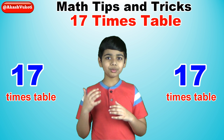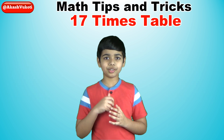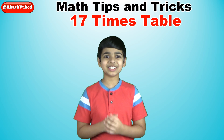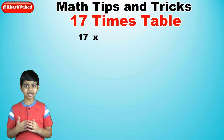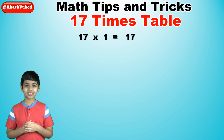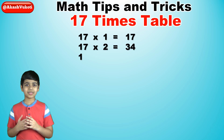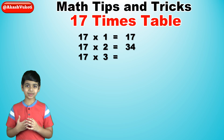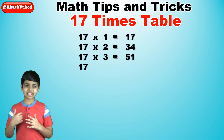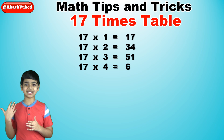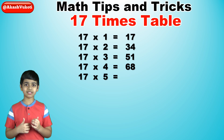Of course, we will recite the 17 times table from the very beginning. Let's go. 17 times 1 is 17. 17 times 2 is 34. 17 times 3 is 51. 17 times 4 is 68. 17 times 5 is 85.